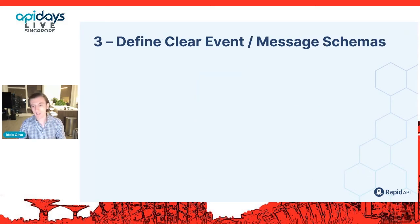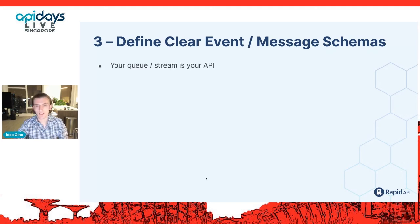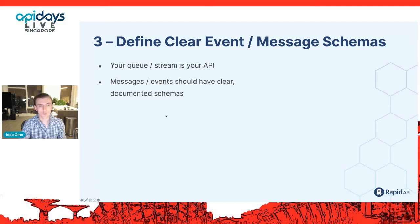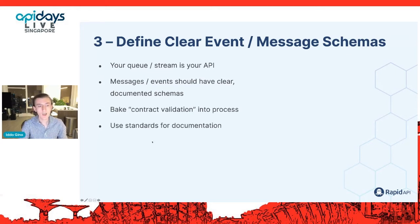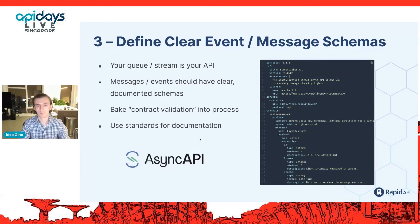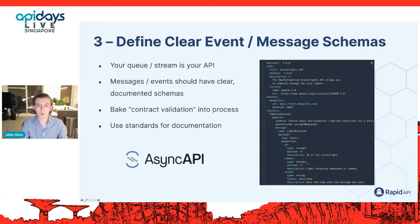Best practice three — defining clear event or message schemas. You have to think about async APIs as APIs. Just like with a traditional API, you start by defining and designing it, building documentation, and having rigid contracts — you must do the same with async APIs. Every message or event should have a clear, documented schema that is validated like a contract. I recommend using the AsyncAPI open source format, which is very similar to OpenAPI but for describing asynchronous APIs.